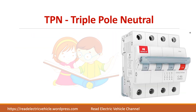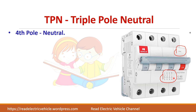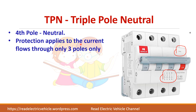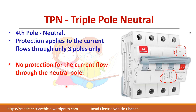Next we have triple pole with neutral, denoted TPN. Three phases have protection, while the fourth line — the neutral — is a direct straight line indicating it is not protected. The protection applies only to the current that flows through the three poles. TPN is normally used for a three-phase four-wire system.